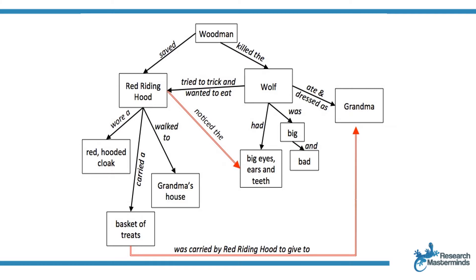A concept map shows the different ideas which form part of a research project, as well as the relationships between them. A concept map visually presents concepts as shapes — circles, ovals, triangles, or rectangles — and the relationships between those concepts are presented as arrows. Your concept map will show the concept in words inside the shape, and the relationship is presented in words next to each arrow, as you can see in this example.